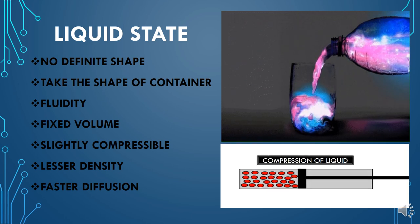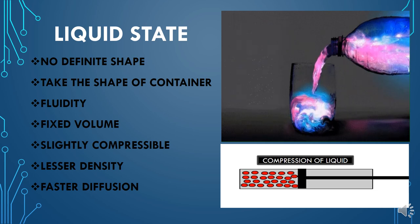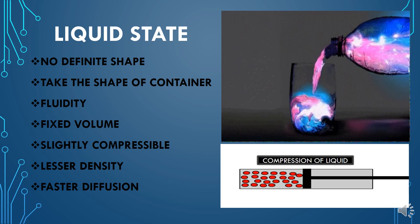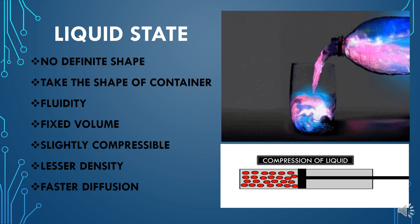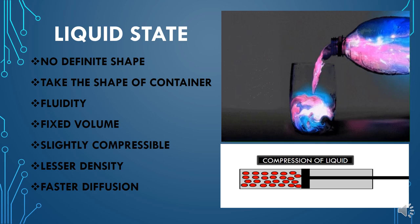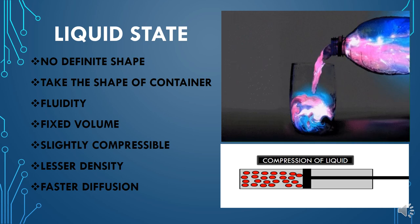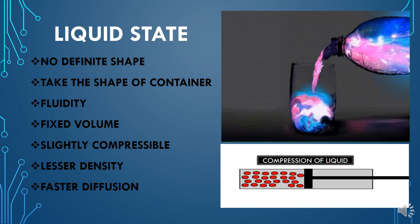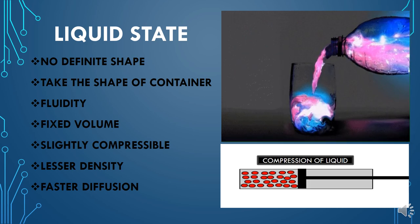Liquids are slightly compressible. If you take a syringe filled with water and compress it, you can slightly compress liquids because they have small inter-particle spaces — comparatively more than solids. So you can compress them a little. Liquids have lesser density compared to solids because packing is not as close. Next, liquids show faster diffusion — kinetic energy in liquids is higher than in solids, so particles can easily diffuse. Liquids mix easily with each other, and solids can also diffuse in liquids because of the empty spaces inside liquids.